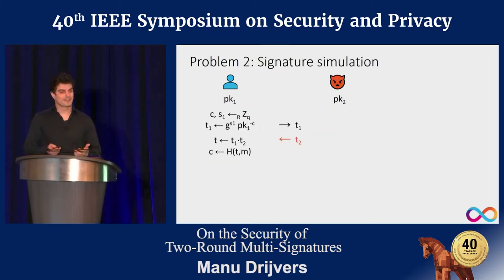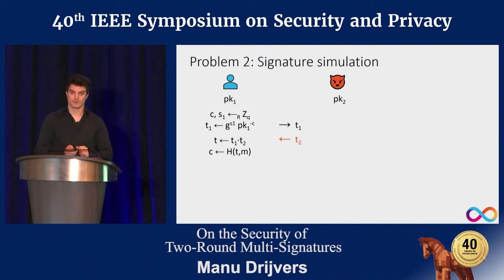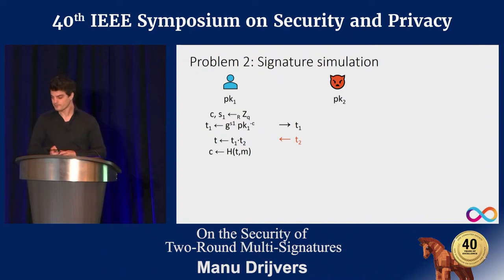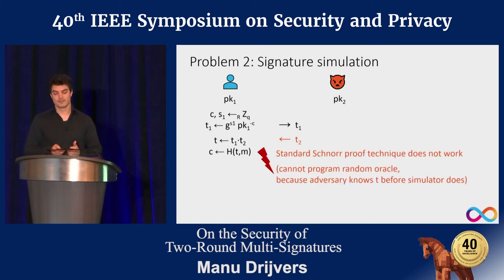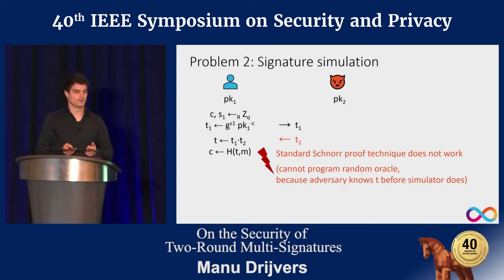There is a second, more subtle issue that mainly shows up when trying to prove security. In the standard Schnorr security proof, signing queries are simulated by programming the random oracle, using an idealized hash function. Unfortunately, in the multi-signature case this doesn't work because the adversary can control the product of the t values. This seems like a technicality, but it prevents you from proving security in the expected way.